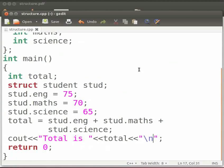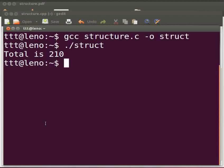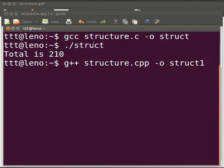Let us execute the program. Come back to our terminal. To compile, type g++ space structure.cpp space hyphen o space struct1. Here we have struct1 because we don't want to override the output parameter struct for the file structure.c. Now press enter.